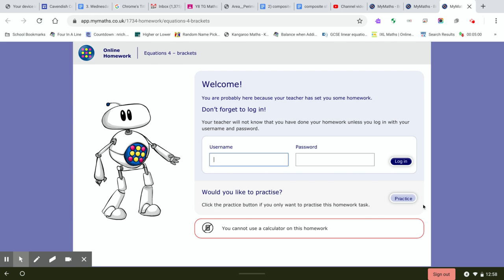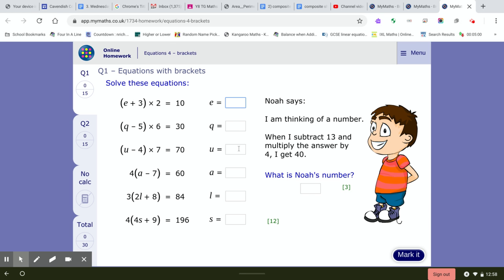So for this you would multiply, we'll do this one here. So it's 4a, 4 times a is 4a, 4 times minus 7 is minus 28. So 4a minus 28 is equal to 60, plus 28, so 4a is equal to 88. So 1a must be 22.